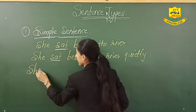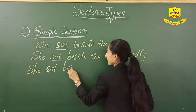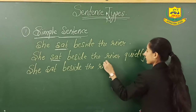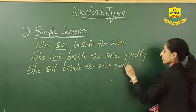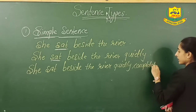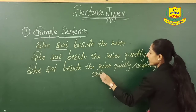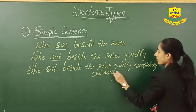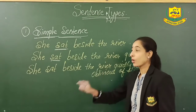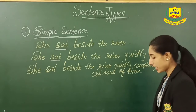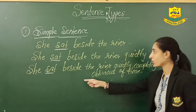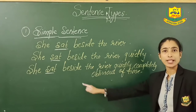The last one: she sat beside the room, quite good, completely, over the years of time — sat. Now, where do you find the verb? Yes, again it is 'sat.' Any other verb? No. We don't find any other verb in the third sentence either.